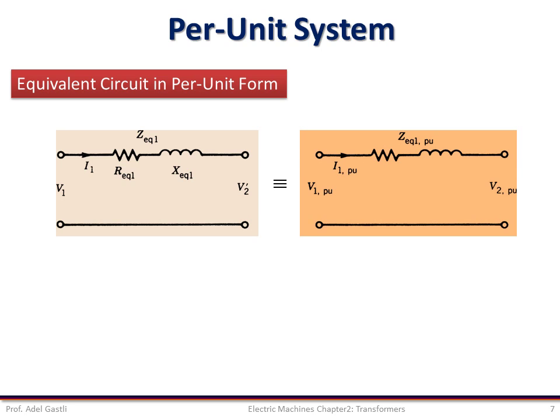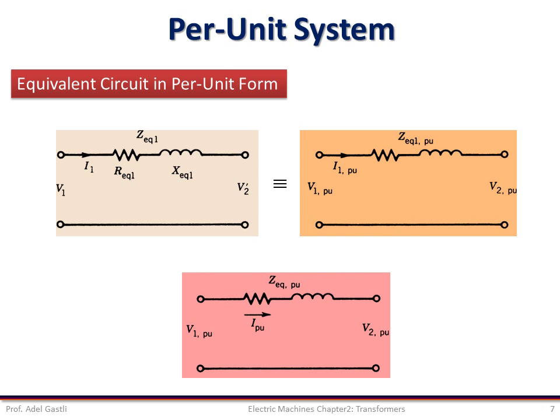It has been shown that the voltages, currents, and impedances in per unit representation have the same value whether they are referred to primary or secondary. Hence, the transformer equivalent circuit in per unit form for either side is the one shown in this figure.